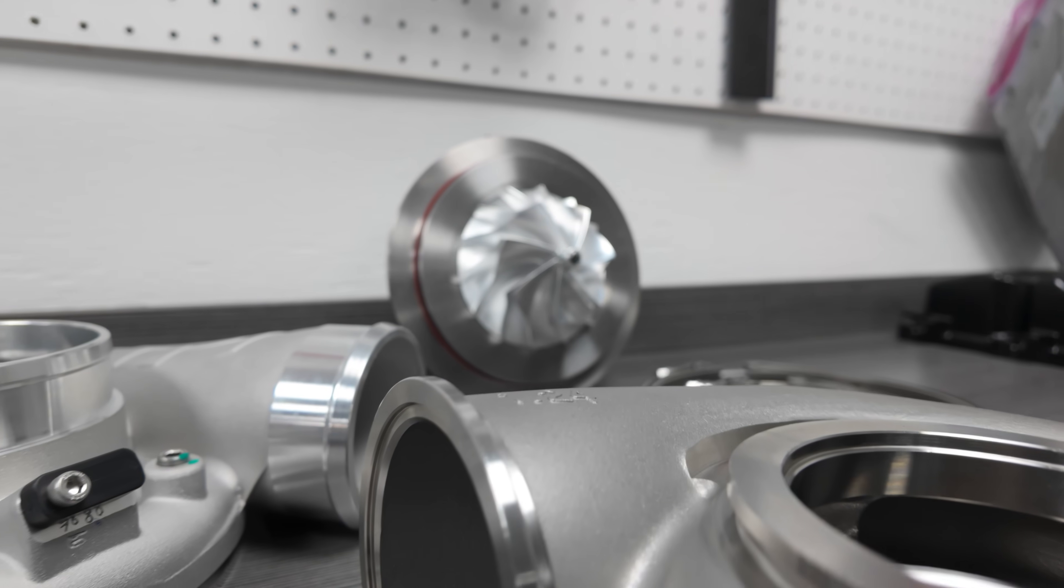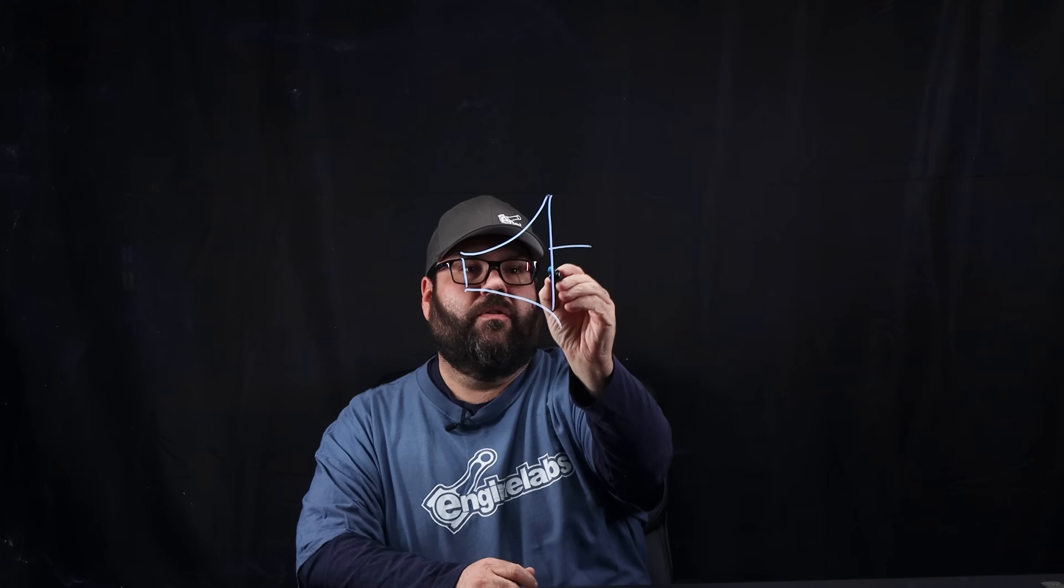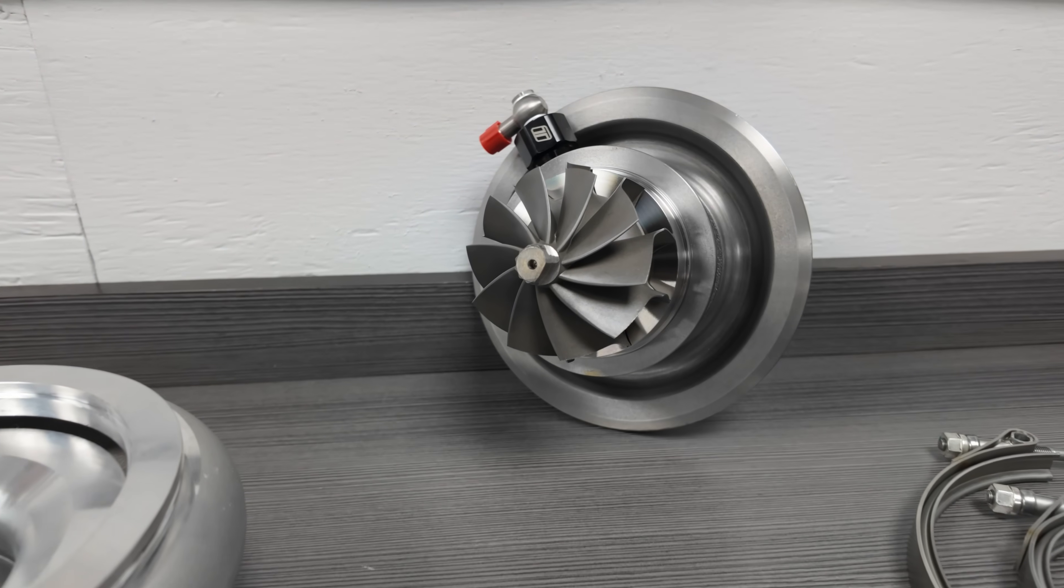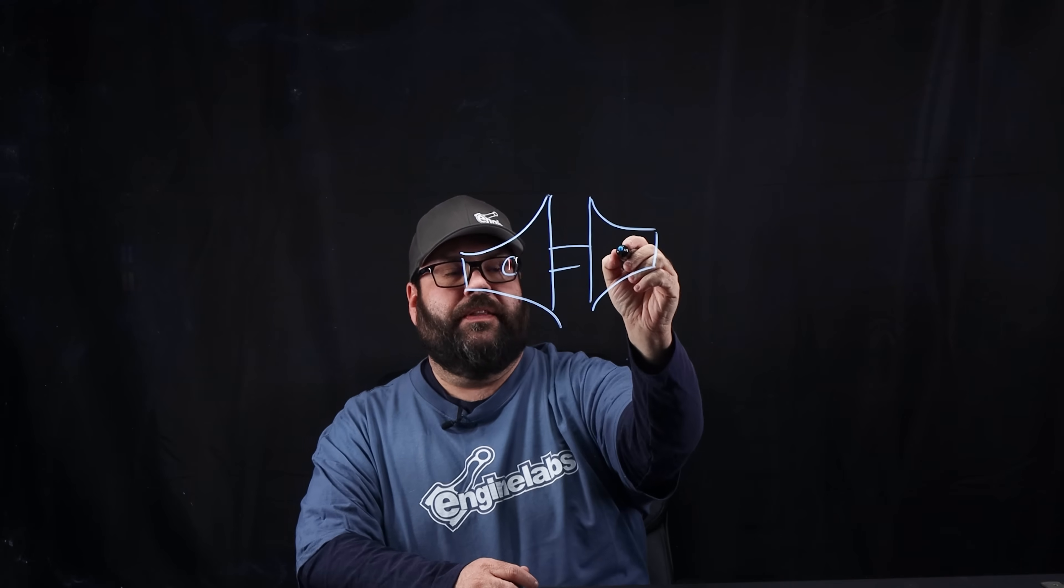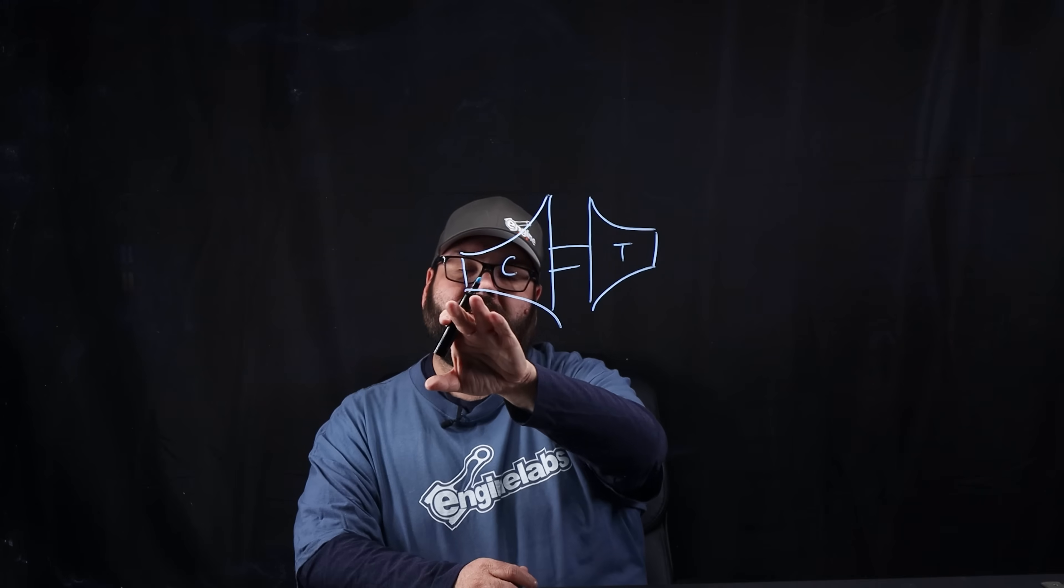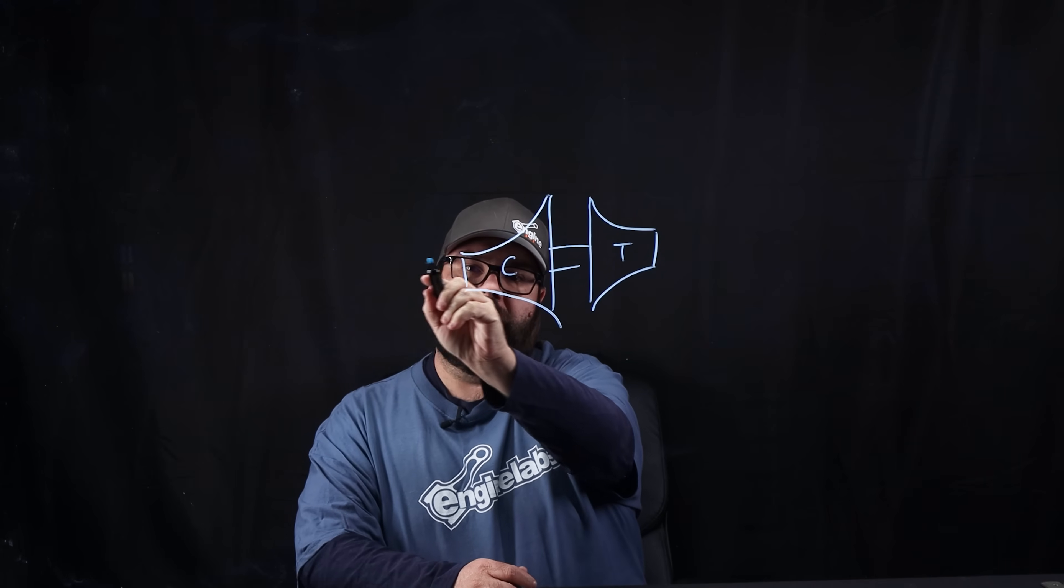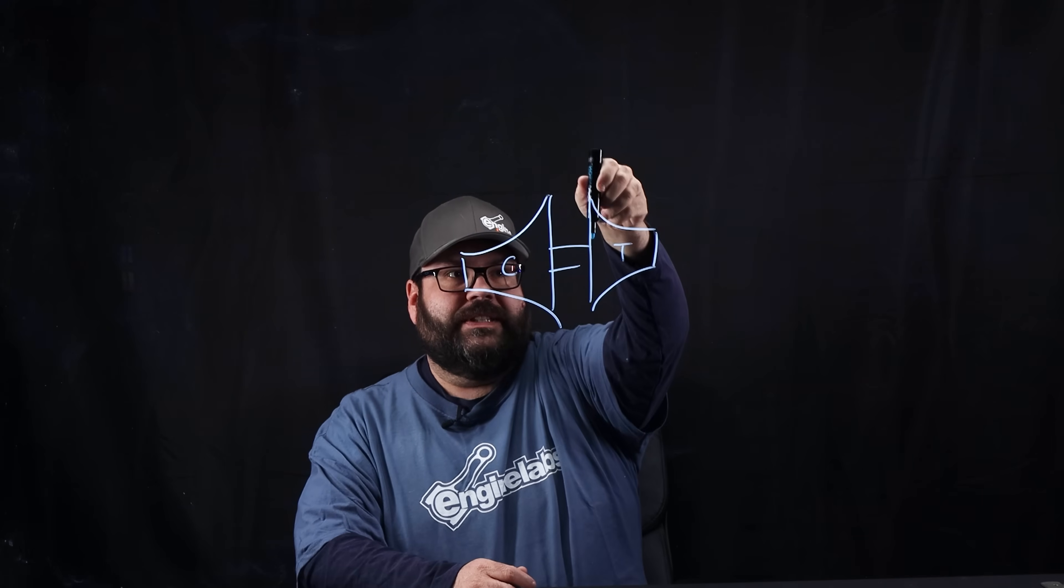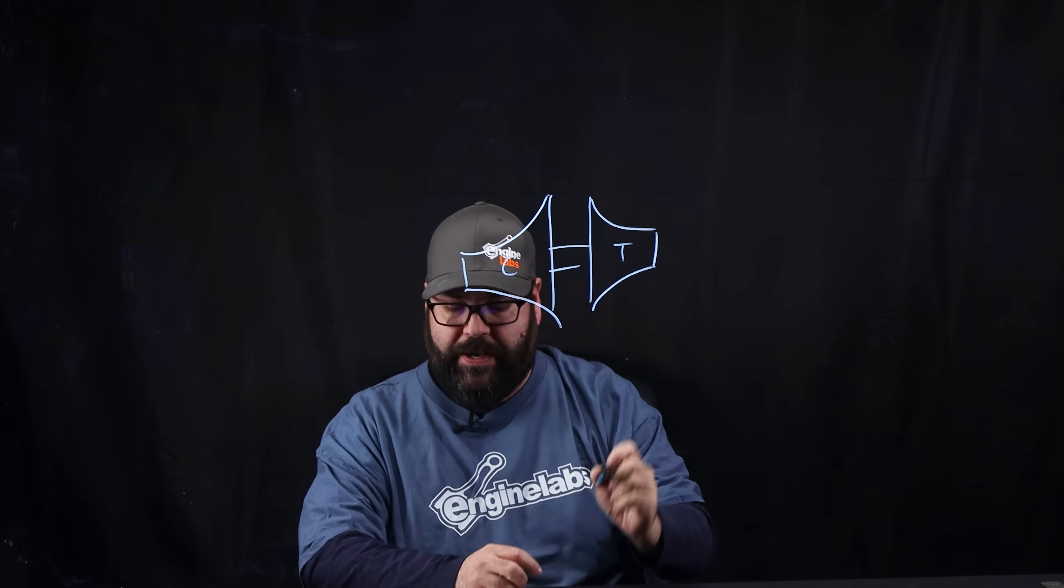So the first thing we need to do is define the sizes of the turbos. There's two primary components of a turbo that we talk about their size. That's the compressor wheel, pardon my horrible drawing skills, and the turbine wheel. This is the compressor wheel, and this is the turbine wheel. Fresh air comes in here. This is spinning, slings it out. Exhaust comes down this way and spits it out this way.